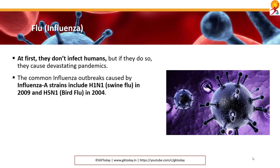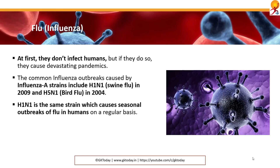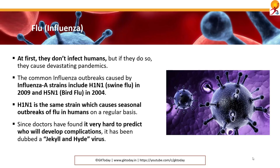At first they don't infect humans, but if they do so, they cause devastating pandemics. The common influenza outbreaks caused by influenza A strains include H1N1 or swine flu in 2009, and H5N1 or bird flu in 2004. H1N1 is the same strain which causes seasonal outbreaks of flu in humans on a regular basis. A mutation of that is H1N1 swine flu. Since doctors have found it very hard to predict who will develop complications, they sometimes dub it the Jekyll and Hyde virus.